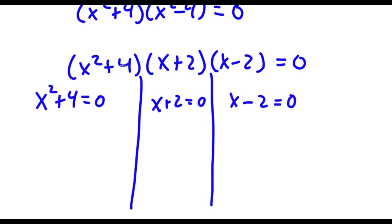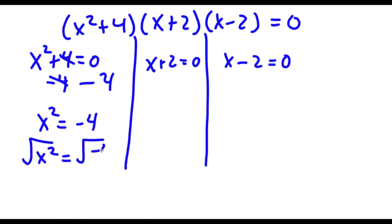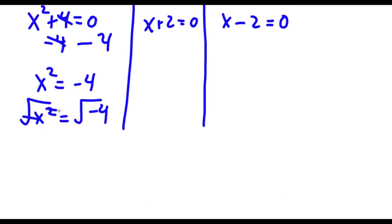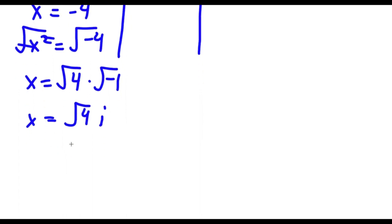For x squared plus 4 equals 0, I subtract 4 on both sides, so x squared equals negative 4. Taking the square root of both sides, the square root of x squared is x, and the square root of negative 4 is the square root of 4 times the square root of negative 1. The square root of negative 1 is i, and the square root of 4 is positive or negative 2, so x equals positive or negative 2i.